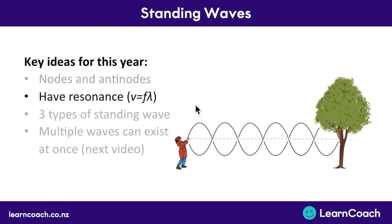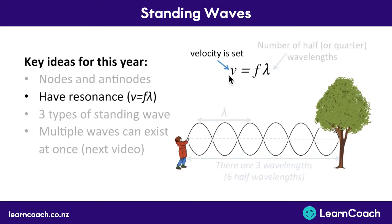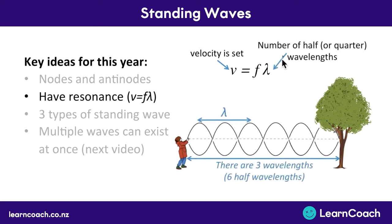The second thing to note is about resonance. Remember the formula V equals F lambda from last year — it will come up quite a lot again this year. In this specific case of shaking a rope against a tree, the velocity of the wave in the rope is going to be set. Also the wavelength or half-wavelength is going to be set, and this is an important point for merit and excellence level answers.